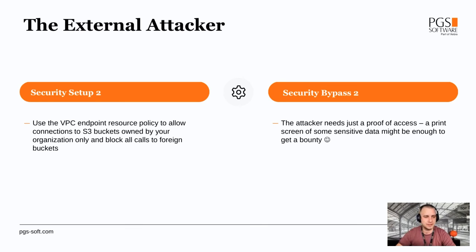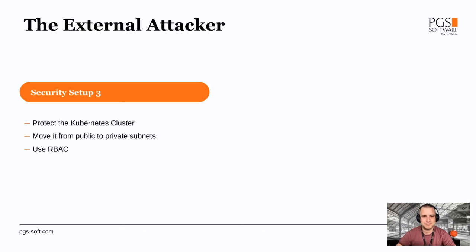The attacker doesn't even need to steal the data — usually it's enough to have proof of access. A screenshot of some data from the pod should be enough to get a bug bounty. So security setup number three, which should really be number one: protect the cluster. If you have a cluster in a public subnet, move it to a private one, add security groups, use role-based access control, and do whatever you can to have as many security layers as possible. Deploy your resources in subnets accessible only by other resources that require them. You don't have customers connecting to the Kubernetes API directly, so why is it publicly exposed?